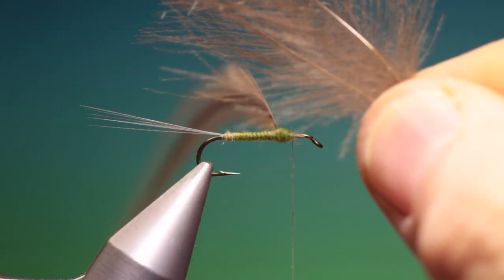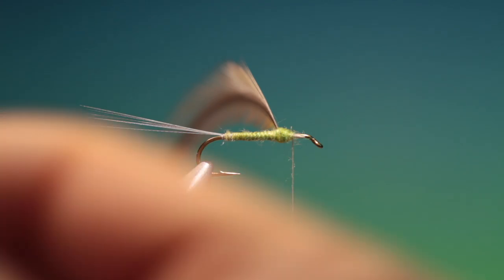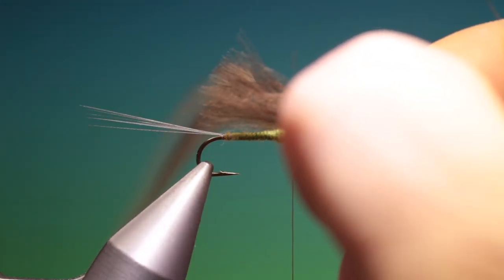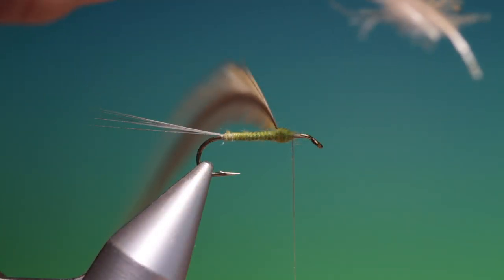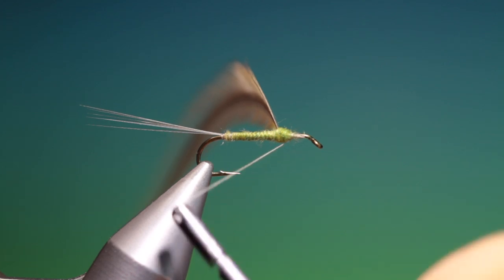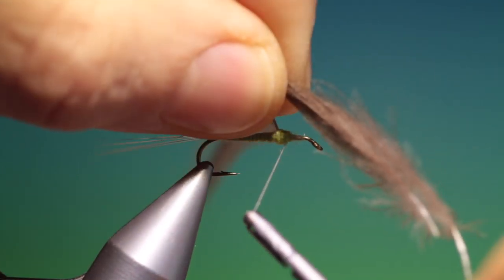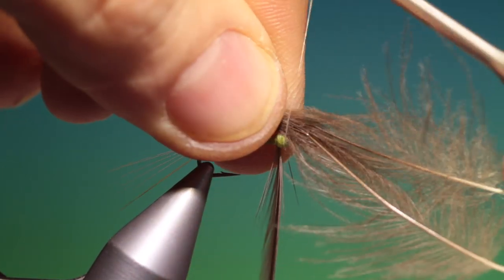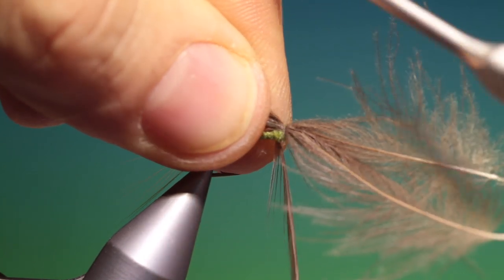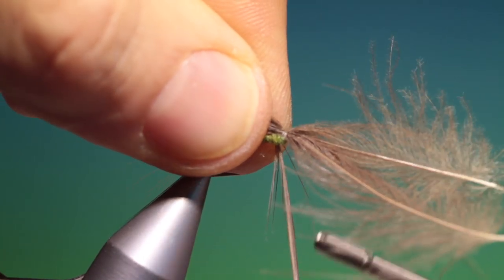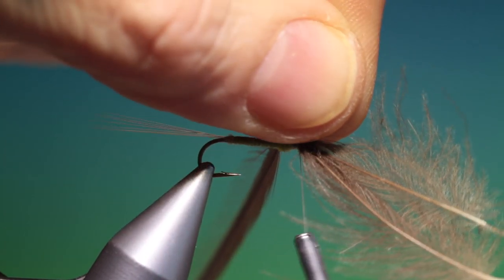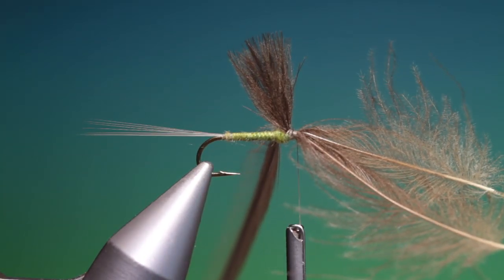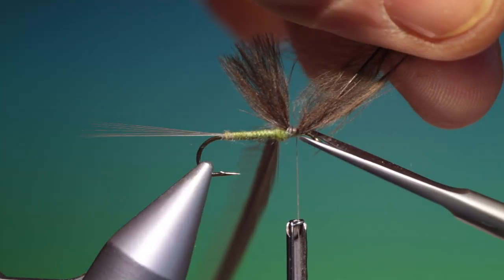Now what we need is two CDC hackles and we pull all the fibres together, measure the wing length to about the correct size. And then what we want is just to go into there. Go forward. That's good, that's good. And we can trim these off.